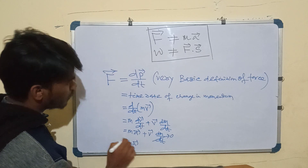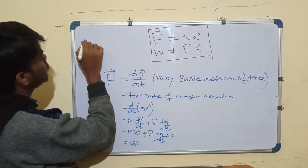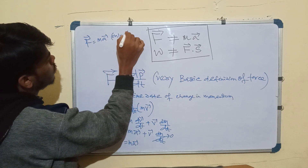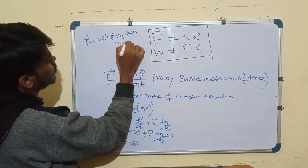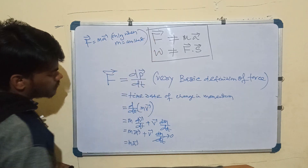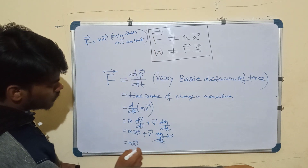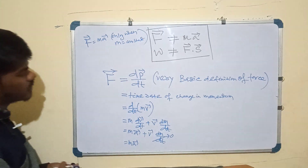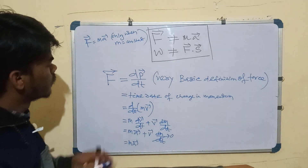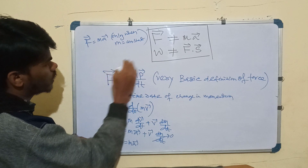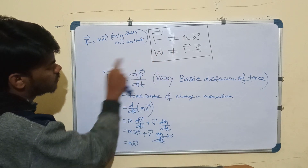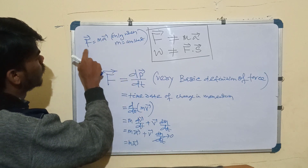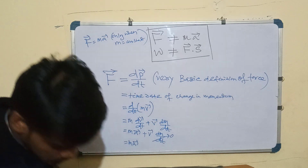F equals ma only when mass is constant. When mass is not constant, F equals ma plus v·(dm/dt). This is the very basic formula to calculate force. Always remember: force is not equal to ma in general — force is equal to the time rate of change in momentum. Only when mass is constant can we say F equals ma.